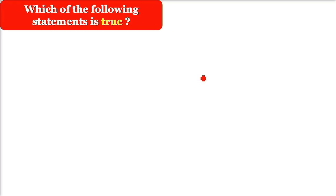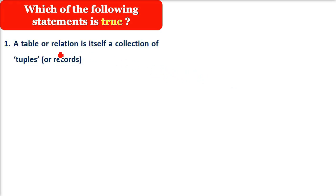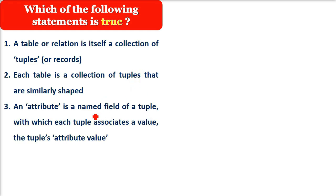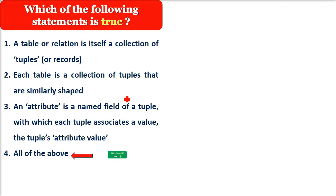Which of the following statements is true? A table or a relation is itself a collection of tuples. Each table is a collection of tuples that are similarly shaped. An attribute is a named field of a tuple with which each tuple associates a value — the tuple's attribute value. And finally, all of the above. اب کیا لگتا ہے؟ اس کا صحیح جواب کونسا ہے؟